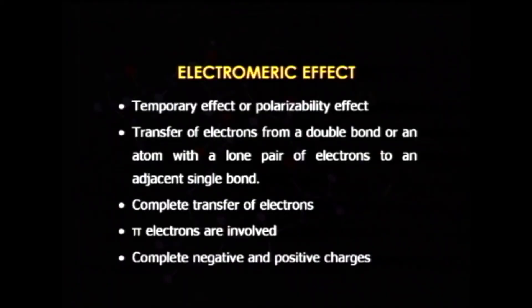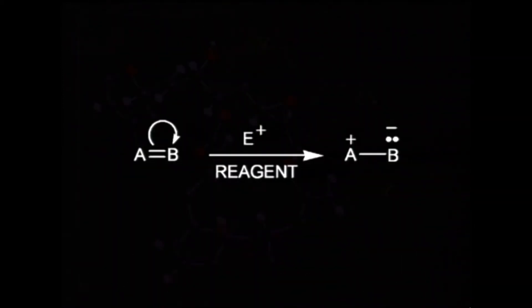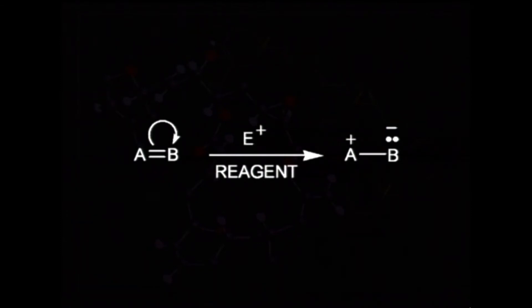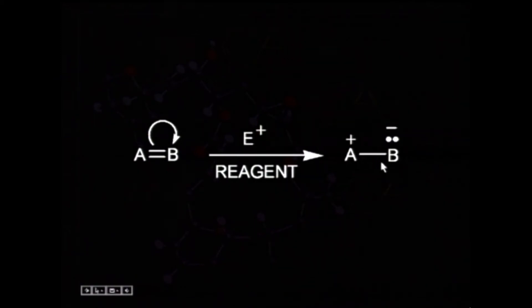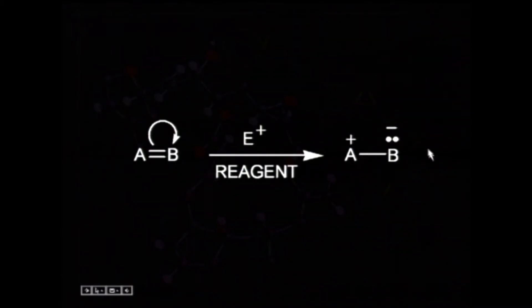Once you remove the attacking reagent, the effect will not be shown, and complete negative and positive charge centers are generated. The electromeric effect is shown by a molecule having a pi bond and is possible only in the presence of a reagent. In the presence of an electrophile, pi bonds are completely transferred from atom A to atom B, and B acquires a negative charge, since the pi bond has now become the complete property of B.